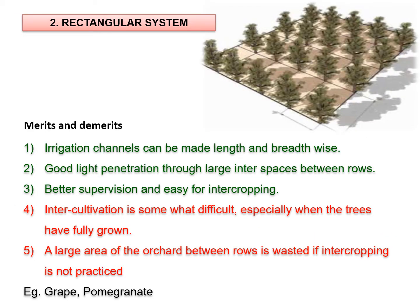The second important planting system is the rectangle system. In a rectangle system, the trees are planted in straight rows running at right angles on the sides of the field. The distance from plant to plant and row to row is not the same, and that is why there is a formation of a rectangle between the four plants.